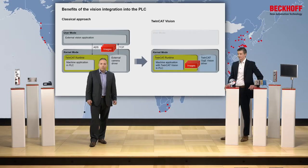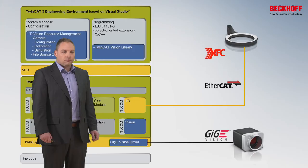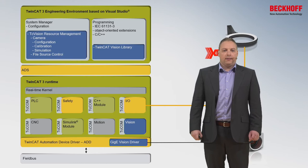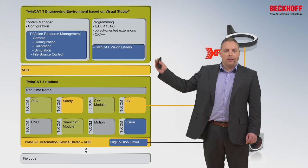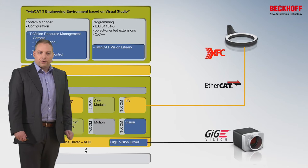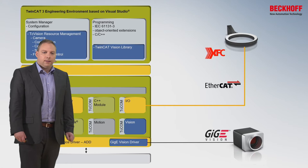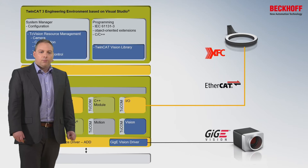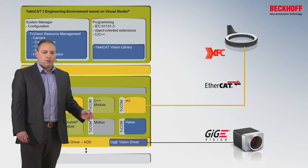Let's dive further into the TwinCAT Vision architecture. Looking at the components available after installation, we first see the tools for engineering — we can add a camera like an axis in the system manager, use a file source control to read images from the hard disk, and we have an extensive library for PLC programming. In real-time mode we find the new camera object which implements the GigEVision interface and our real-time driver to receive images. We also benefit from existing technologies like EtherCAT and XFC. Using the EL2569 terminal, we can generate a light pulse and camera trigger simultaneously, coordinated very precisely to any motion position via a distributed clock timestamp.